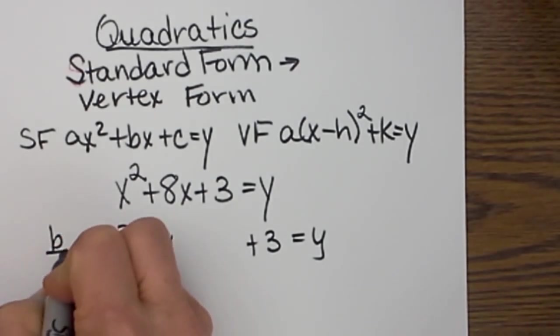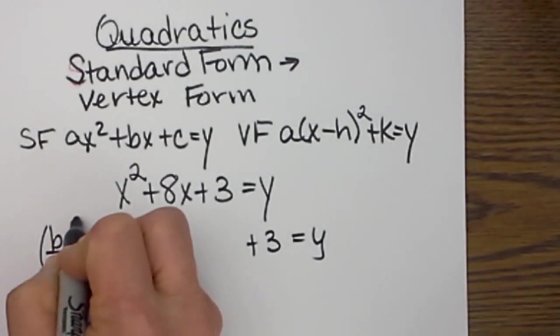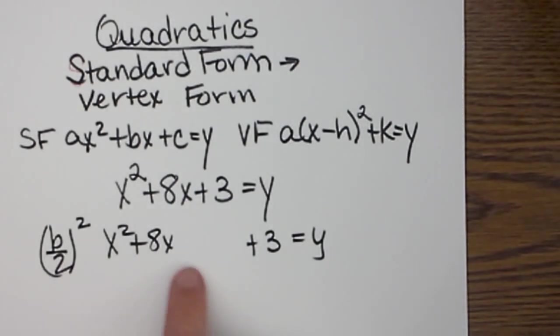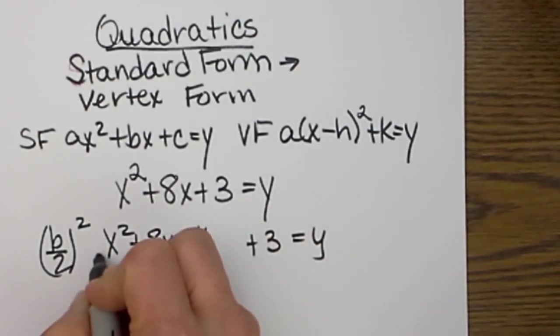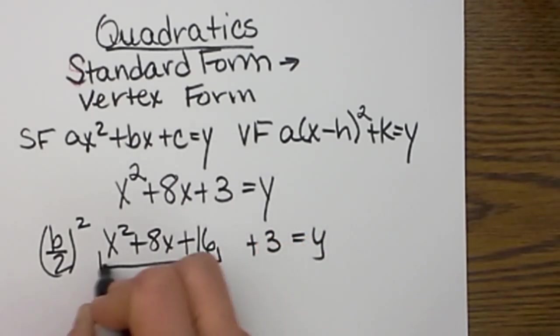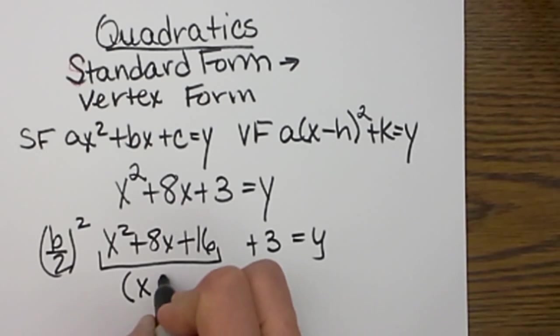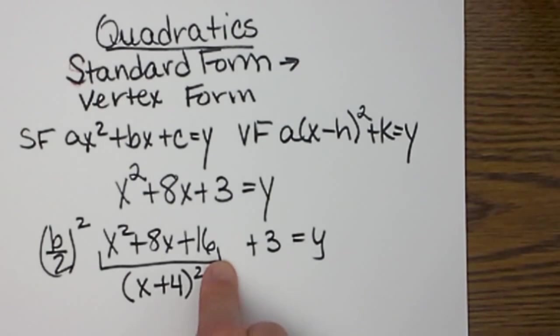So half of b is 4 and 4 squared is 16. So I need a 16 here to complete the square. Now what I have created with these three terms is a perfect square trinomial that will factor to (x + 4)², which is x + 4 times x + 4.